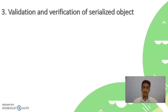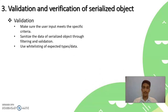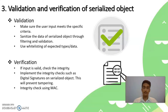The third method is validation and verification of the serialized object. In the validation part, enforce strict constraints in the server-side code while deserializing user input. If the input looks like an unexpected type, is not valid, or does not meet specific criteria, then simply discard the user request for deserialization. In the verification part, if the input is valid, check its integrity using a digital signature on the serialized object or a Message Authentication Code (MAC). We will also see the practical implementation of this at the end of the presentation.